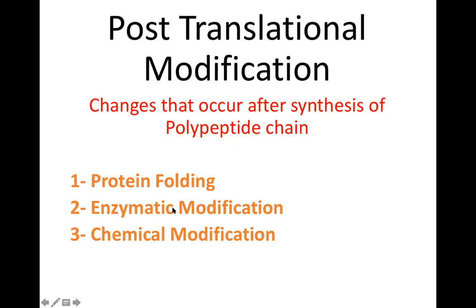In the active site, there is an additional peptide chain — you can say it has been hidden. When activity is required, enzymatic modifications cause this peptide chain to be cleaved and broken down. As a result, the active site of the enzyme, or the interaction site of the hormone, becomes exposed and is then available to perform its activity.